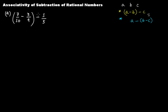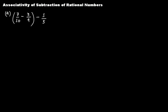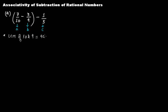So let's check. We have 7/10 minus 3/9 minus 1/5. We have taken three rational numbers — clearly a = 7/10, b = 3/9, and c = 1/5. Now let's perform. To subtract one rational number from another, the first step is always to take the LCM. The LCM of 10 and 9 gives you 90.